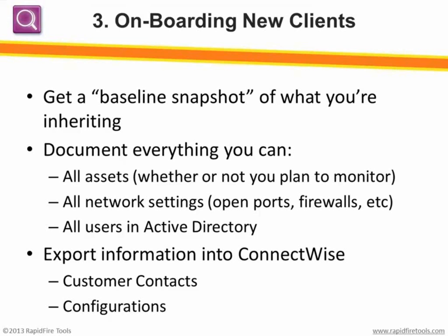Using assessments when onboarding is obvious. You want a baseline snapshot of the new customer's network and system configuration before you bring them on, since you need to know everything about their environment and communicate that to your help desk. You need to know about all the assets you're supporting — their age, software, Active Directory, who's an administrator. Most of you are probably using a PSA or ticketing system like Autotask or ConnectWise, so you've got to get that information in there too. Ideally you want to take information from your network assessment tool and pre-populate your PSA. There's a direct import from our tool to ConnectWise and Autotask, and an Excel report where you can save to CSV and import into others.